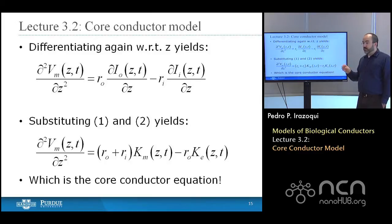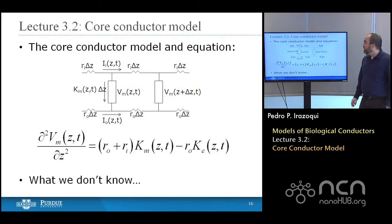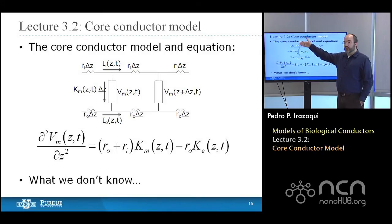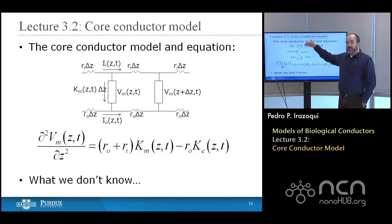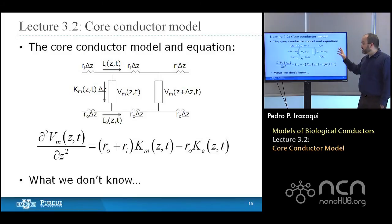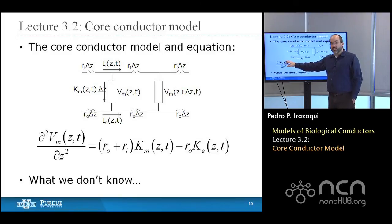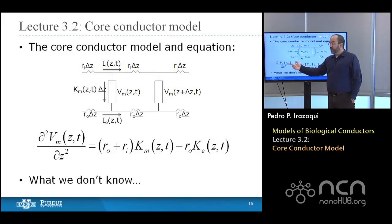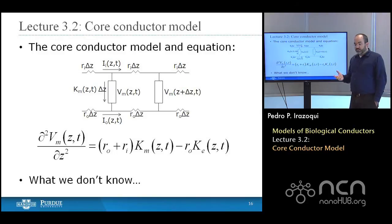The core conductor model describes the relationship between currents inside and outside the cell, voltages inside and outside the cell, and the transmembrane current given specific impedances. It expresses everything in terms of the second derivative of the membrane voltage. If we know the impedances and the membrane current, we can calculate the membrane voltage as a function of space and time — a very important result, but not everything. There's something we clearly don't know.